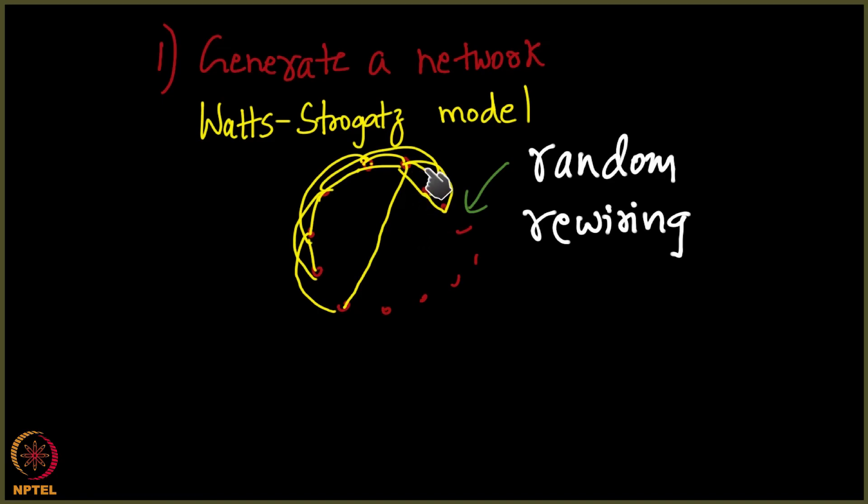A person who is here might only know people in his local neighborhood, but then by this random rewiring what you do is you connect him to a person who is otherwise geographically far away from him and that is what the Watts-Strogatz model tells you. For you to get this small world property, such a random rewiring should happen. What do you mean by random rewiring should happen? Who makes it happen?